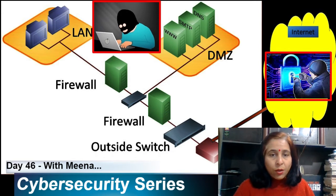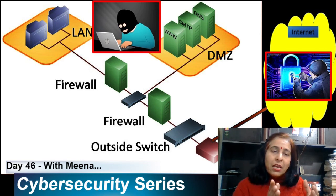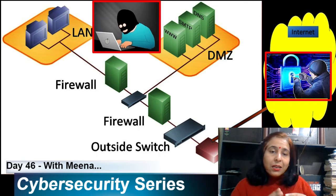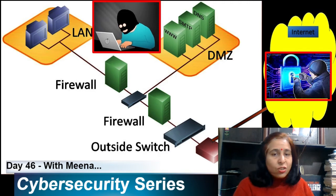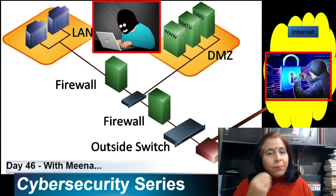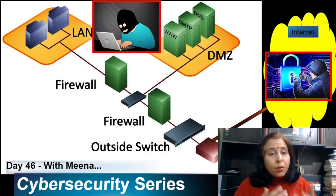They check what types of services are running. For example, if the DMZ has a web server, when the hacker accesses it, that web server may reveal which ports are open, what services are running, what OS is running, and what applications are installed. They then try to find vulnerabilities inside the network.